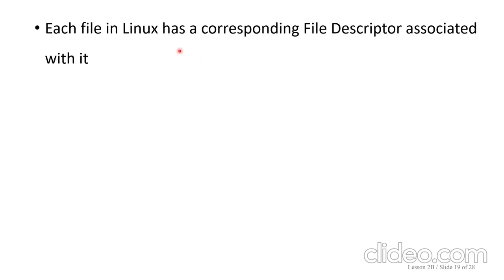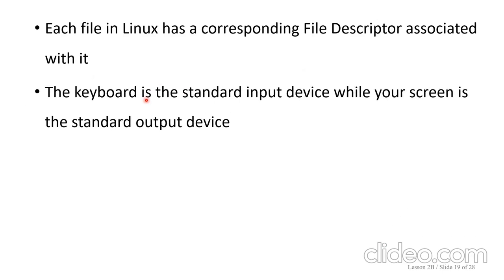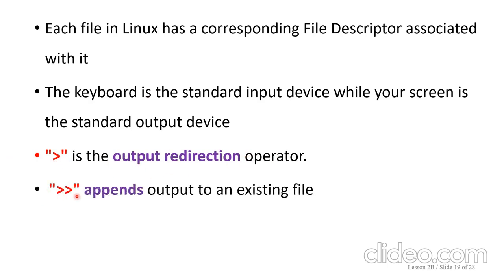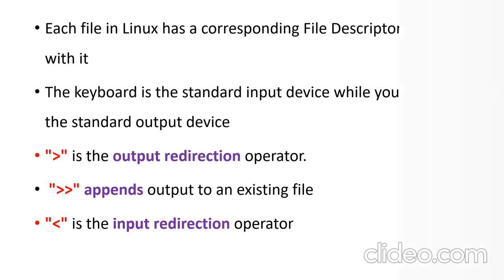So each file in Linux has a corresponding file descriptor associated with it. Keyboard is a standard input device. While your screen is a standard output device. Greater than symbol is the output redirection operator. Double greater than symbol is used to append output to an existing file. And less than symbol is used for input redirection operator. Hope you all understand about managing documents with the file descriptors and redirection. Thank you for watching.